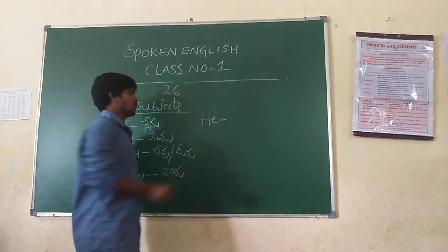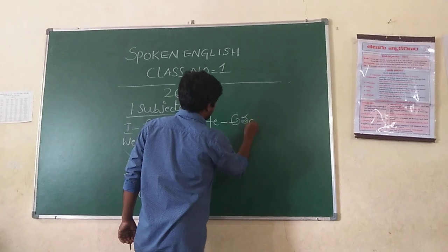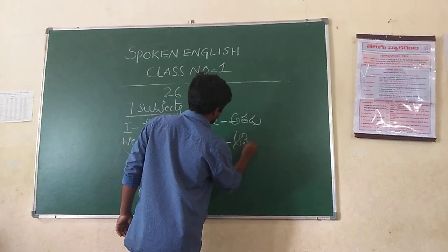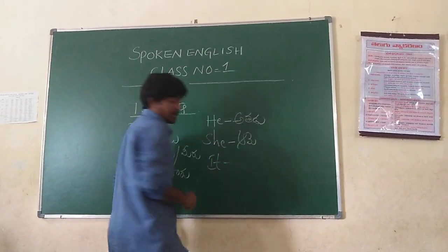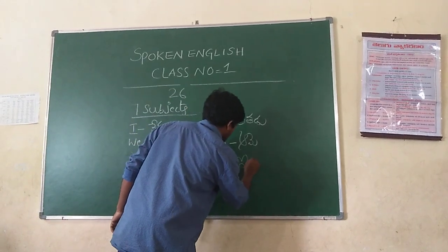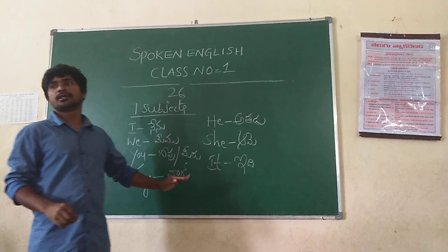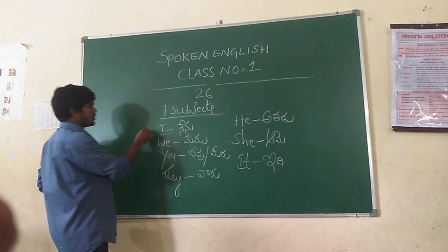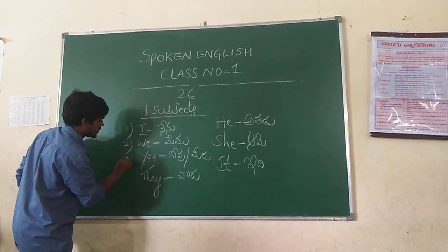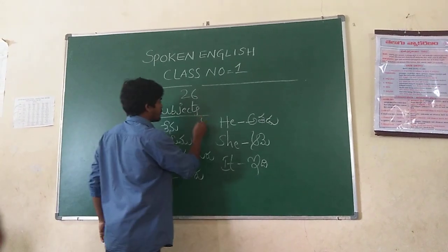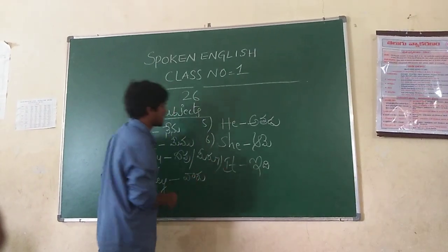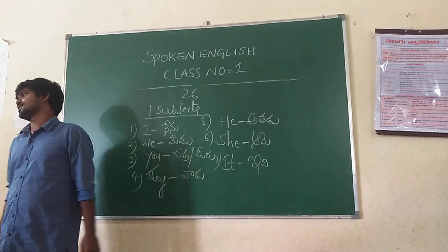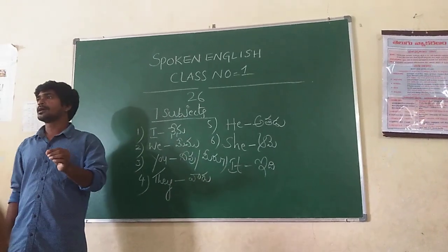Ataru. How many subjects are there in the English language? 7 subjects. Okay, can you count? 1, 2, 3, 4, 5, 6, 7. Without these 7 subjects, we cannot speak in the English language, and we cannot form a sentence.